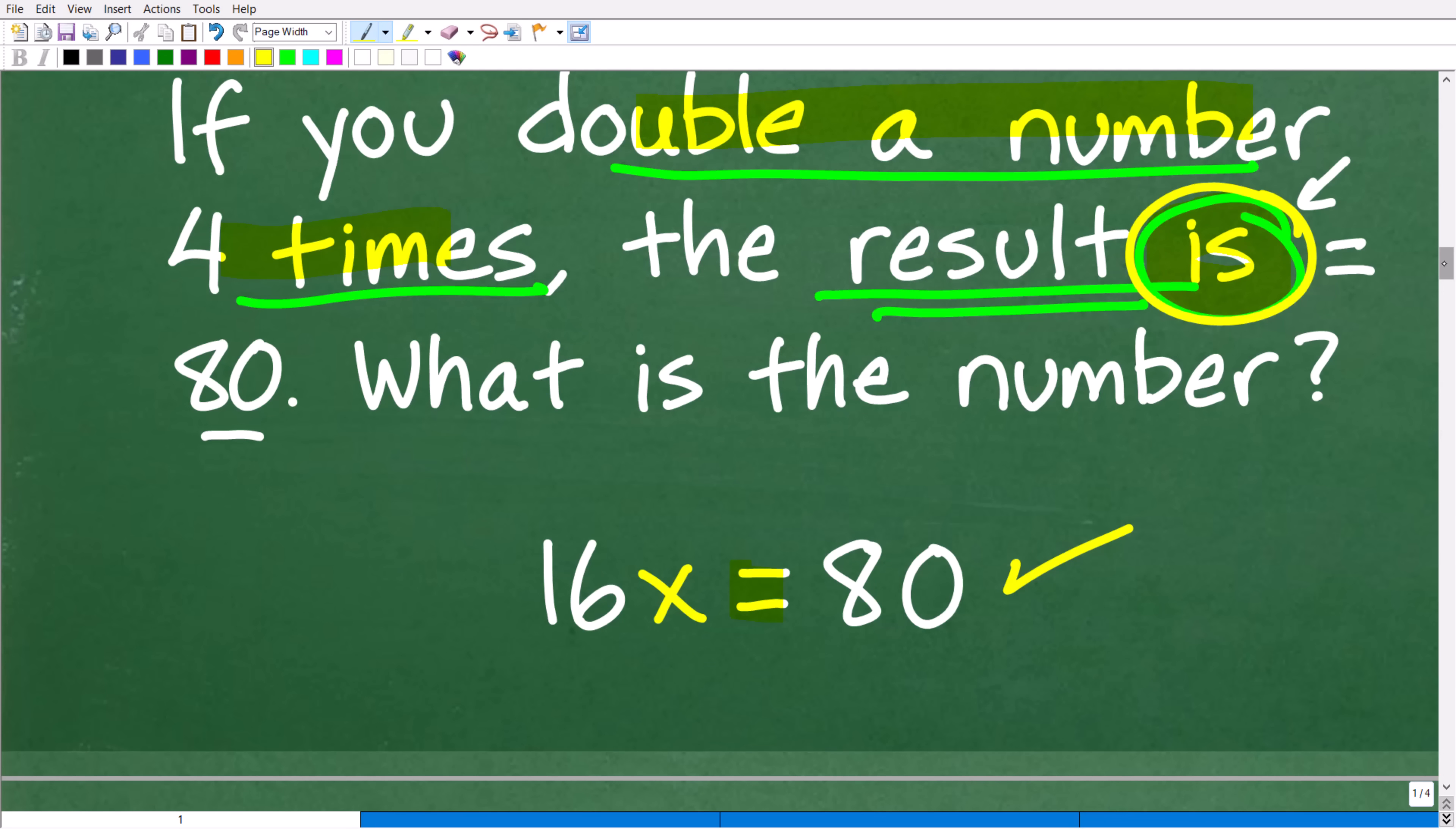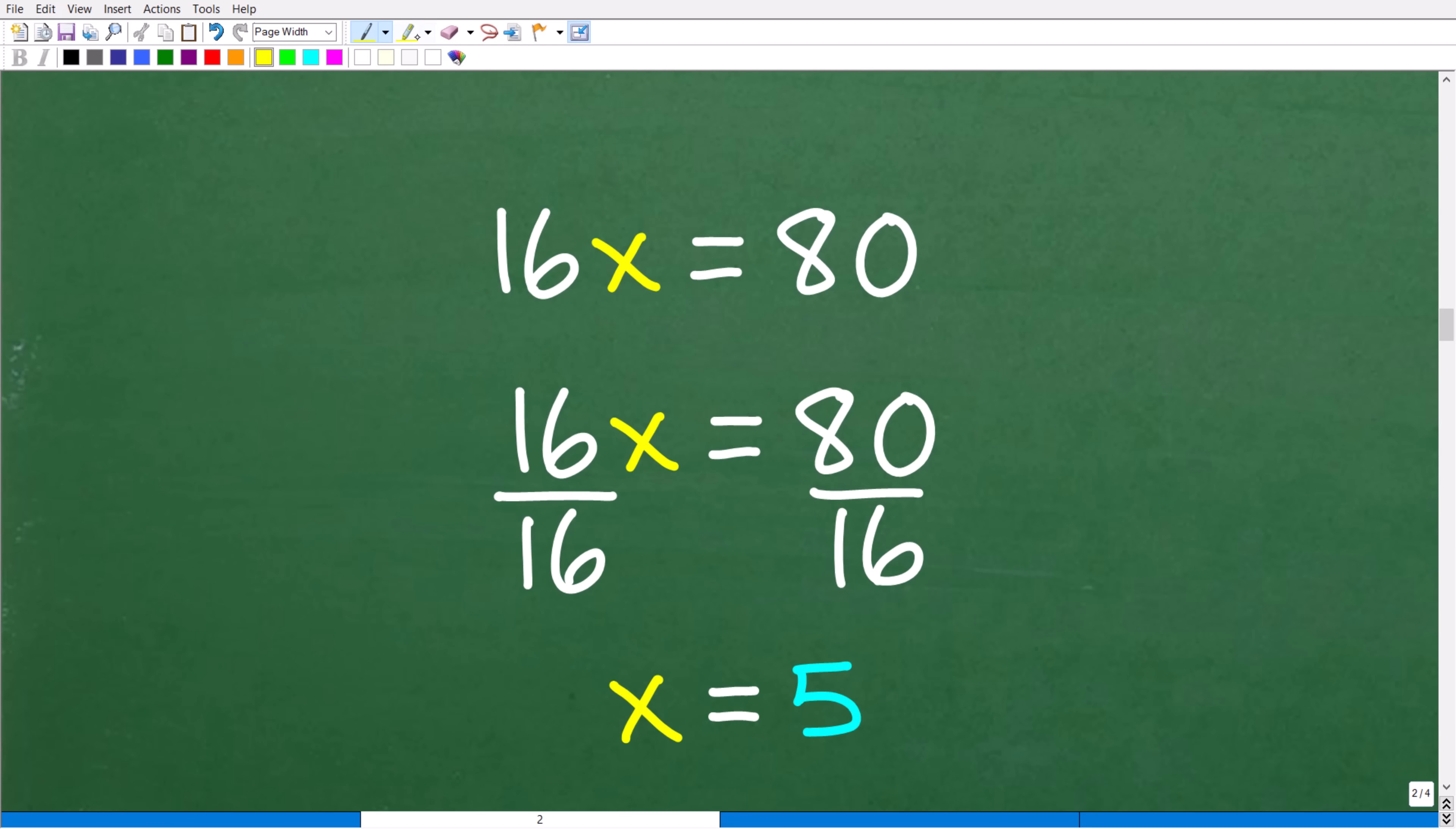So, let's go ahead and take the next step. Okay. So, here was our equation. Remember, we're using algebra here. And we have x. X is our number, right? So, we're going to double that number four times. The result is 16x, but the result is 80. The result is equal to 80. So, we have 16x is equal to 80. So, to solve this equation for x, all we have to do is divide both sides of the equation by 16. Okay. So, 80 divided by 16 is 5. So, x is equal to 5.